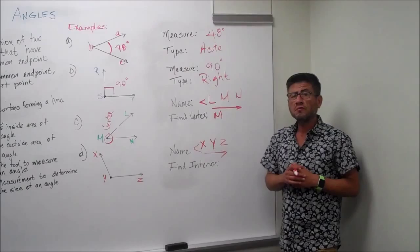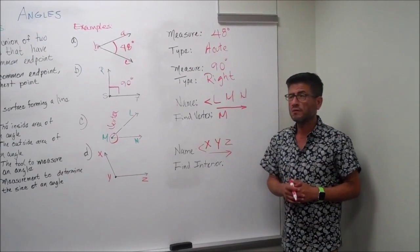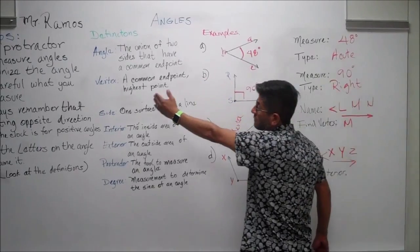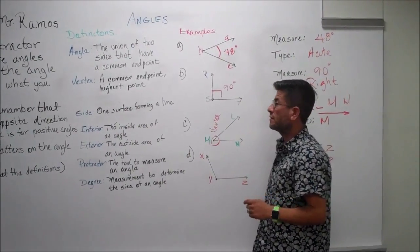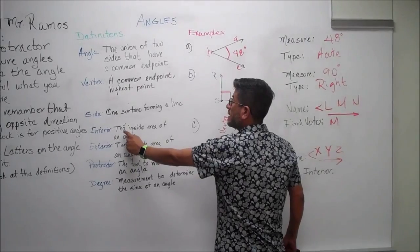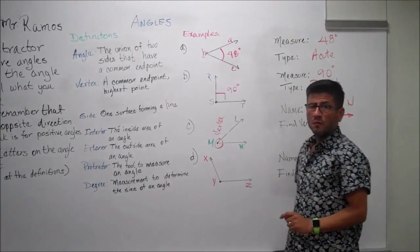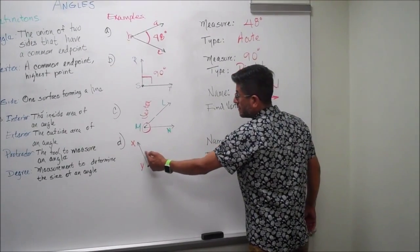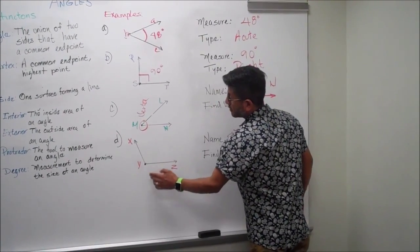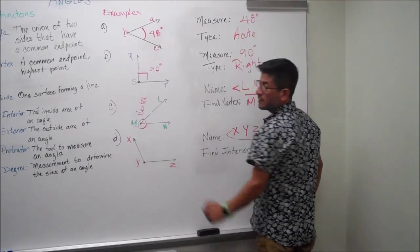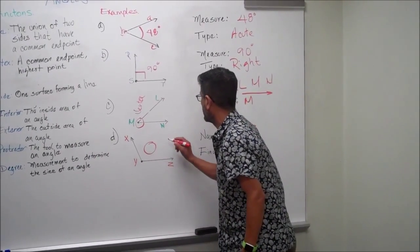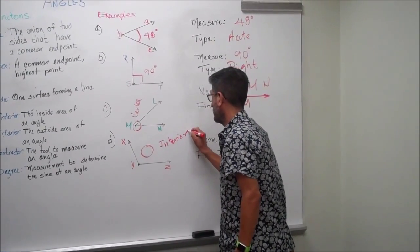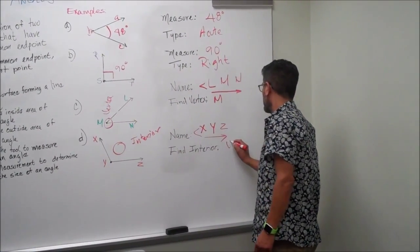It's asking us now to find the interior. Look at your definitions and find interior — it says interior is the inside area of an angle. If you look at your angle right here, this is the inside and this is the outside. So your interior is the inside. And it's on the letter Y.